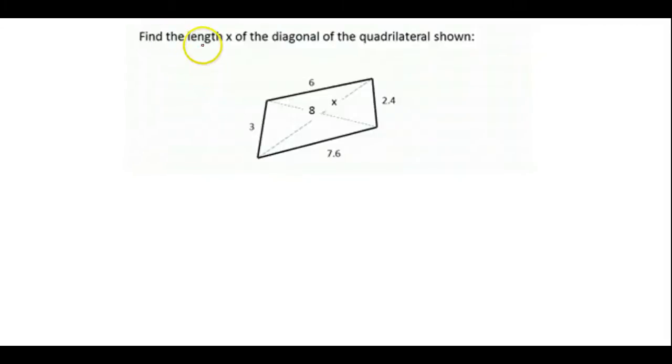Okay, so we are asked to find the missing length x in this quadrilateral. It's this diagonal here. In your text, they do an example with a parallelogram, but this does not tell us it's a parallelogram or trapezoid. All that we know is it's a quadrilateral, so those are the only properties we have to go on, and that makes this a little more difficult.